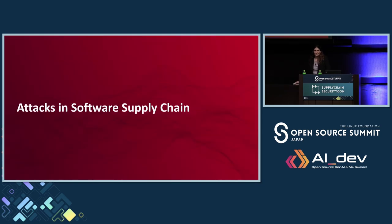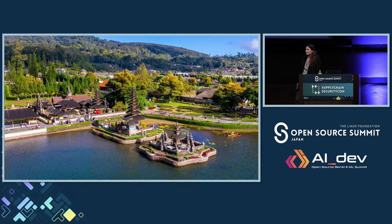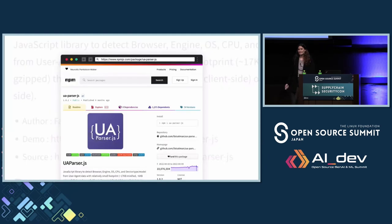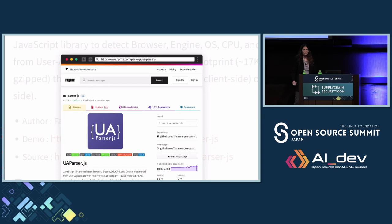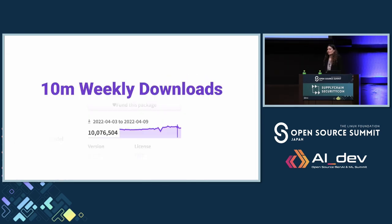Now we get to the cool part — let's talk about some attacks. Meet Faisal. He's a cool guy. He lives in Indonesia. He maintains a lot of packages on NPM, and one of them is ua-parser.js. It has been maintained for more than 10 years and has more than 10 million weekly downloads. Very popular.